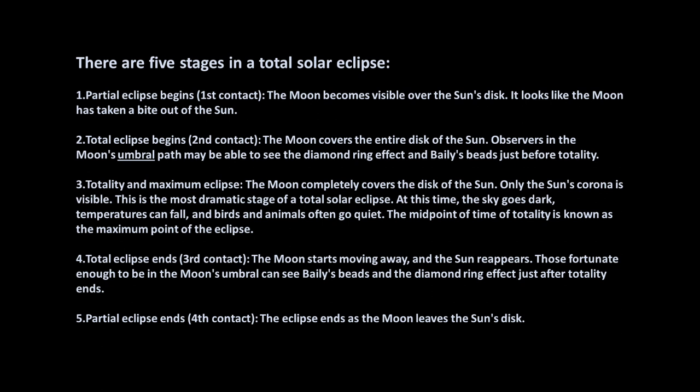During totality, right before totality, we're going to see what we call the diamond ring effect — that last blast of light. And then there's something called Bailey's beads. If you've ever seen the moon in a telescope, it's very ragged around the edges because of the valleys and mountains. Well, the sunlight is still hitting those valleys as the moon continues to cross over the Sun, so you see that reflection — we call that Bailey's beads.